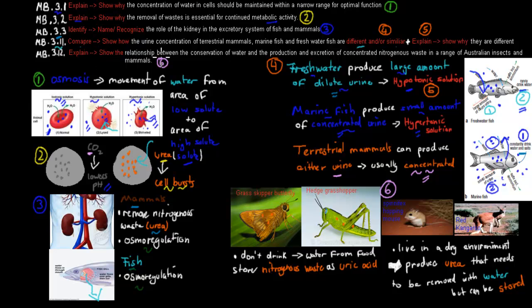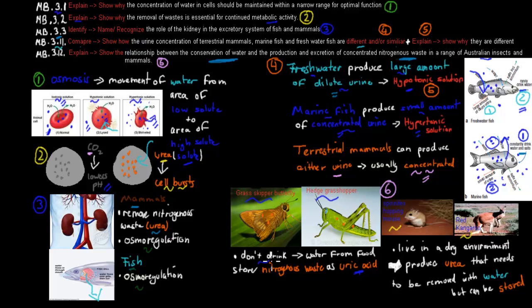The next dot point says 'explain' — show the relationship between the conservation of water and the production and excretion of concentrated nitrogenous waste in a range of Australian insects and mammals. For Australian insects such as the grass skipper butterfly and the hedge grasshopper, they produce uric acid because they don't drink at all — they get water only from food — so they have very little water. The best way to conserve water is to produce uric acid, which can be deposited on the outside of their wings or skeleton, so they don't need to urinate, saving water.